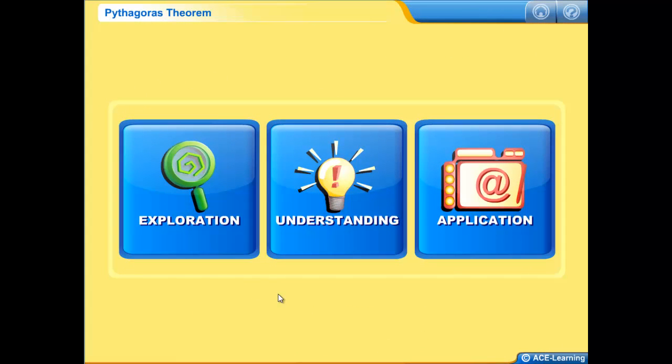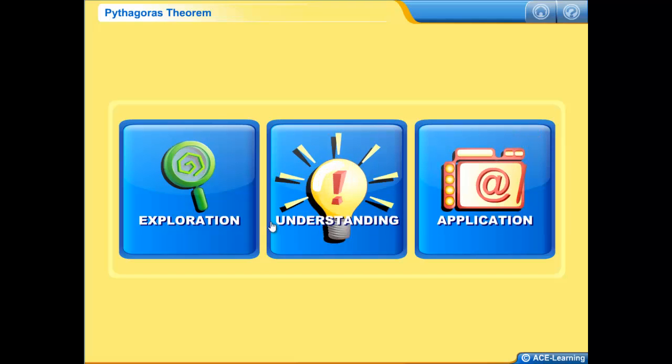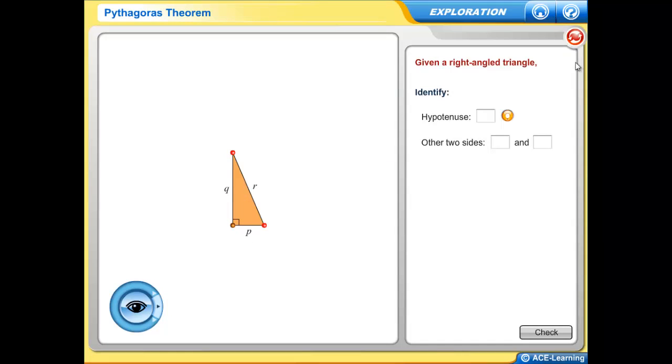Now let's look at the program proper. Each EA comes in three sections: Exploration, Understanding, Application. All the exercises in each section are randomly generated such that each student receives a unique set.